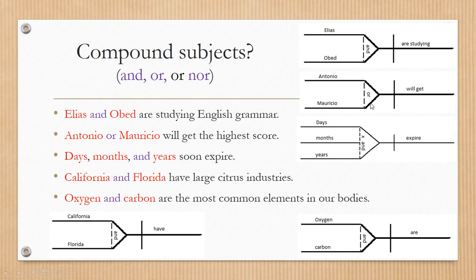The connectors in the subject side are going down. And, or, nor, they are going down. So then we go back to the baseline. We split it because we're going to start the verb, and it is are studying.